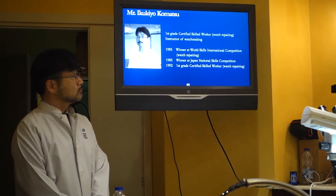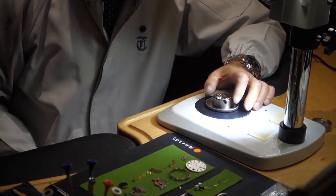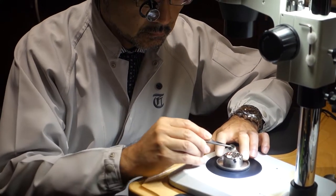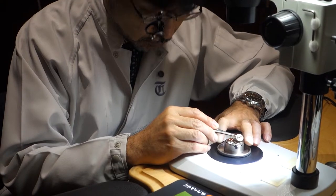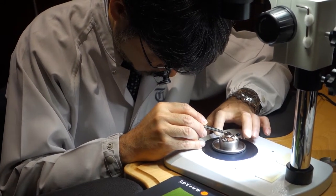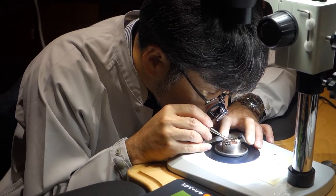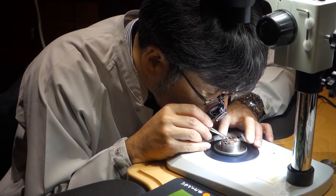So now the coils are in place, we will set the barrel. So the barrel is the drive source of the watch. The mainspring inside it is about 55 centimeters long.